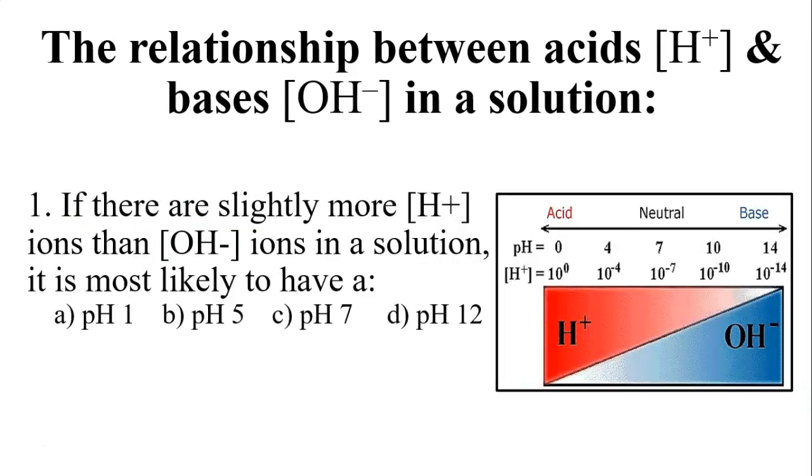Now I want to look at three example problems with you. We talked last week about this being a teeter-totter. If you have exactly equal H and OH, you're neutral. If you have a little bit more H or a lot more H. So this first sample problem, number one says, if there are slightly more hydrogen ions than hydroxide ions in a solution, it's most likely to have a pH of blank.